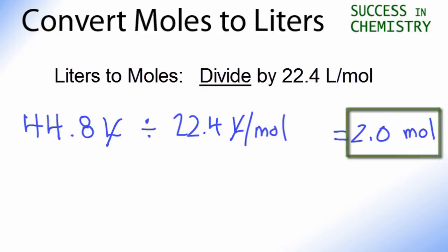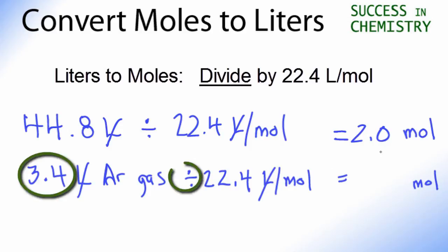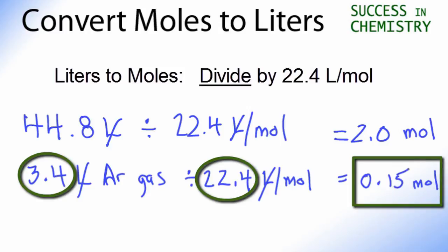So let's try one more. Convert 3.4 liters of argon gas to moles. Press pause and give it a try. Again, we'll divide by 22.4 since we're going from liters to moles. Our liters will cancel out and we'll have 3.4 divided by 22.4, which will give us 0.15 moles.